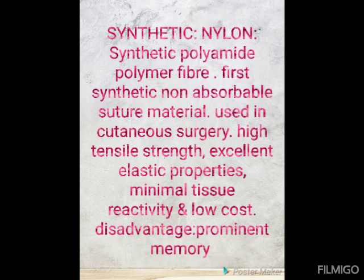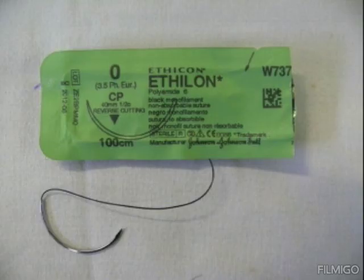Moving on to synthetic non-absorbable suture materials — linen and silk being natural. The first synthetic is nylon, introduced in 1940. It is a synthetic polyamide polymer fiber and was the first synthetic suture material, used in cutaneous surgery. It has high tensile strength, excellent elastic properties, minimal tissue reactivity, and low cost. The disadvantage is prominent memory, which leads to an increased number of knots — three to four throws are needed to hold a stitch in place.